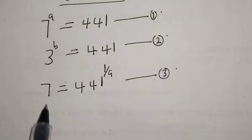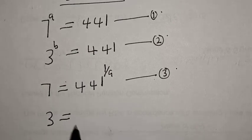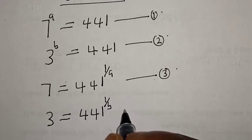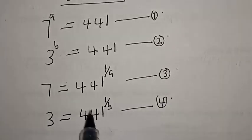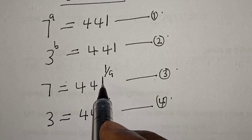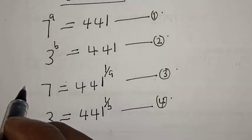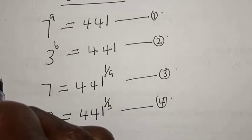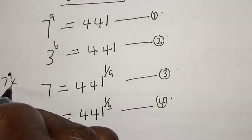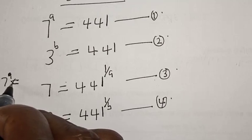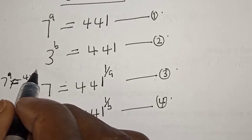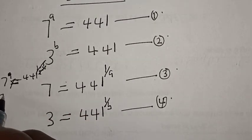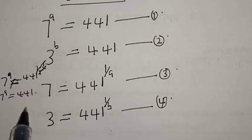For 3 raised to power b, we have 3 equals 441 raised to power one over b — let's call this equation four. From equation three, if we multiply both exponents by a, we have 7 raised to power a equal to 441 raised to power one over a times a. The a's cancel, so we are left with 7 raised to power a equals 441, which confirms equation one.